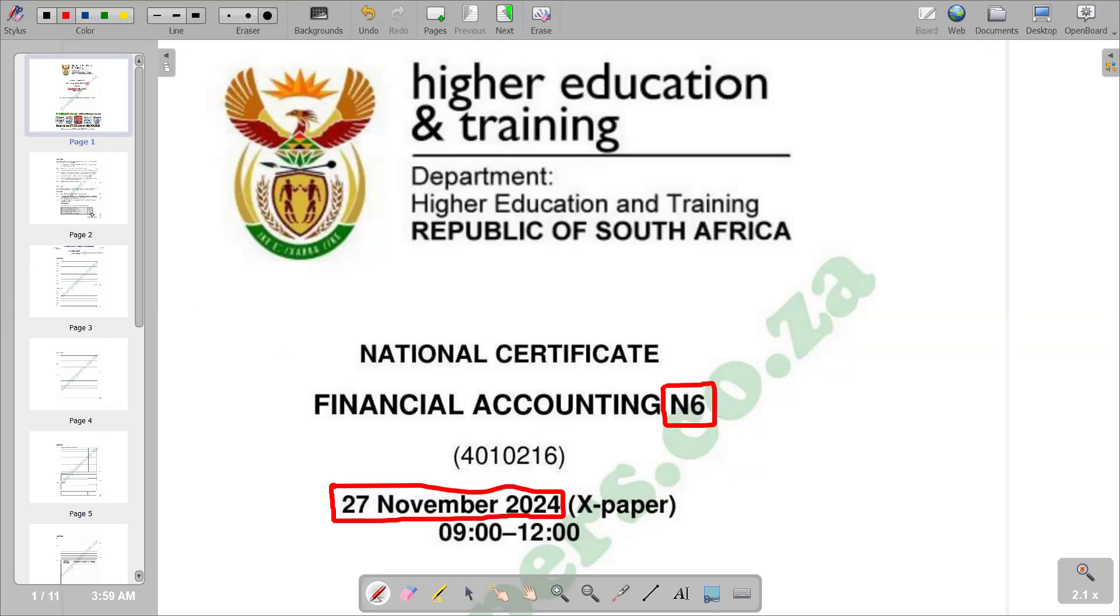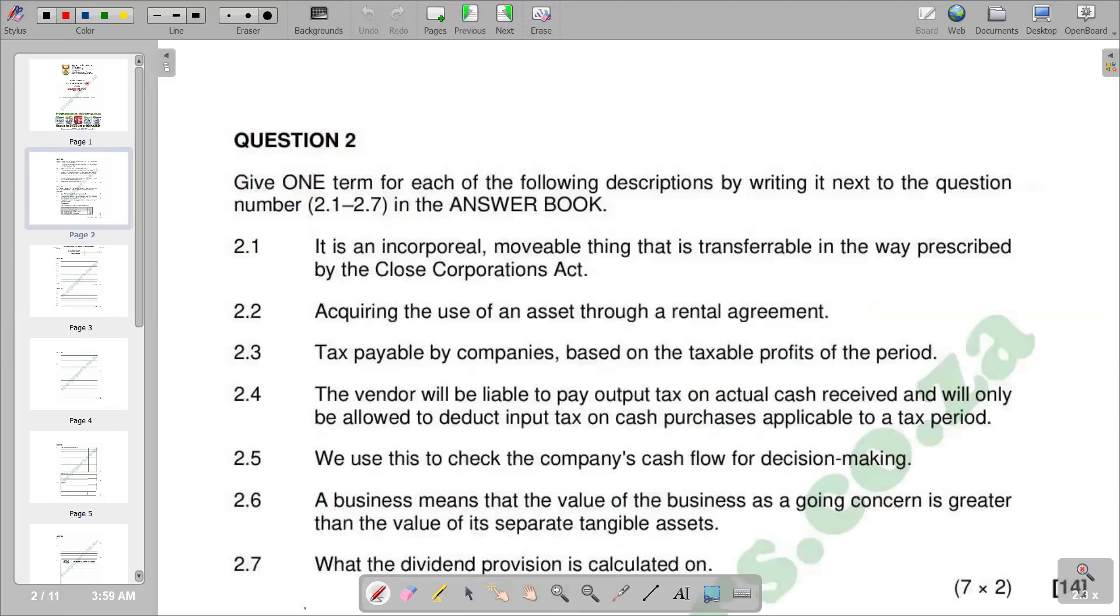We are going to look at a question on company and close cooperation concepts. We are going to look at question 2 on that question paper. The question asks to link the key terms to each of the following descriptions by writing it next to the question number, that is 2.1 to 2.7.